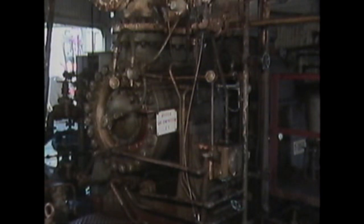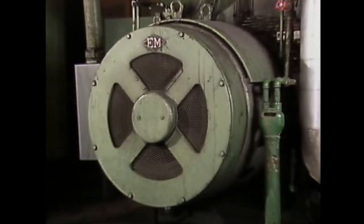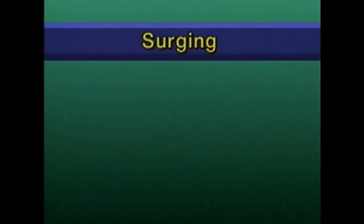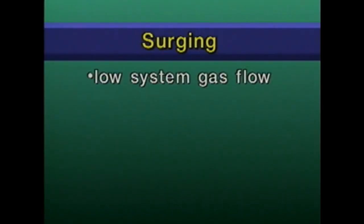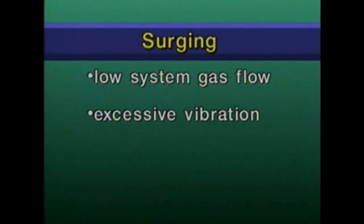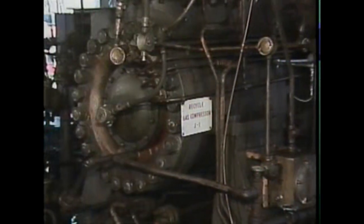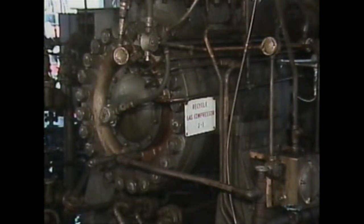The symptoms of surging are unmistakable. Surging results in violent fluctuations in discharge pressure. And when an electric motor is used as a driver, surging can cause extreme variations in motor current. Other symptoms include low system gas flow, excessive vibration, and a muffled banging sound inside the compressor. If surging is not corrected, it can cause serious damage to the compressor.